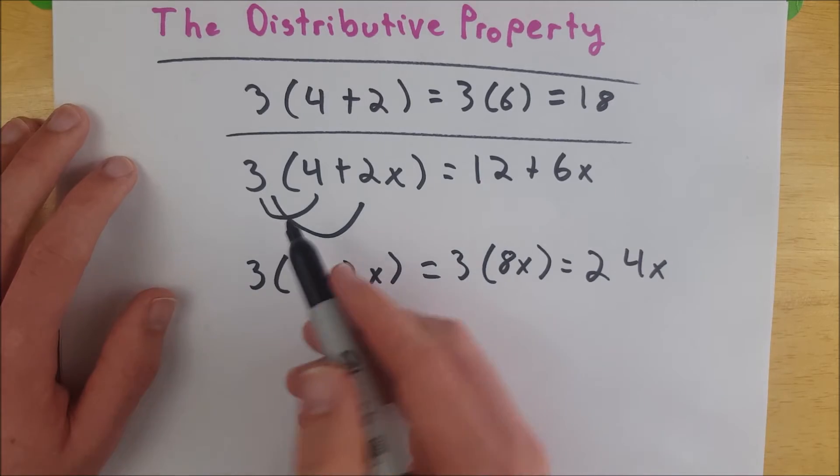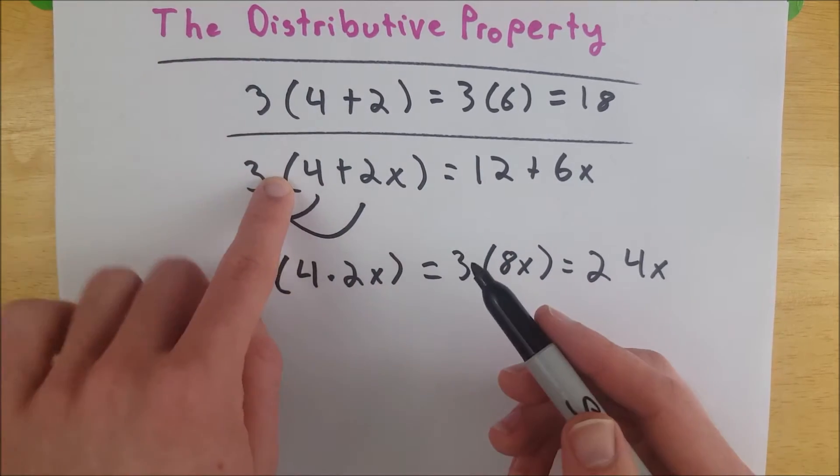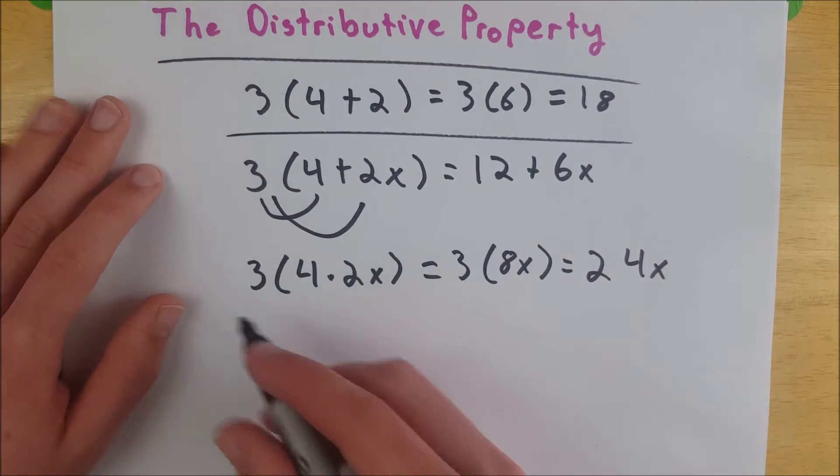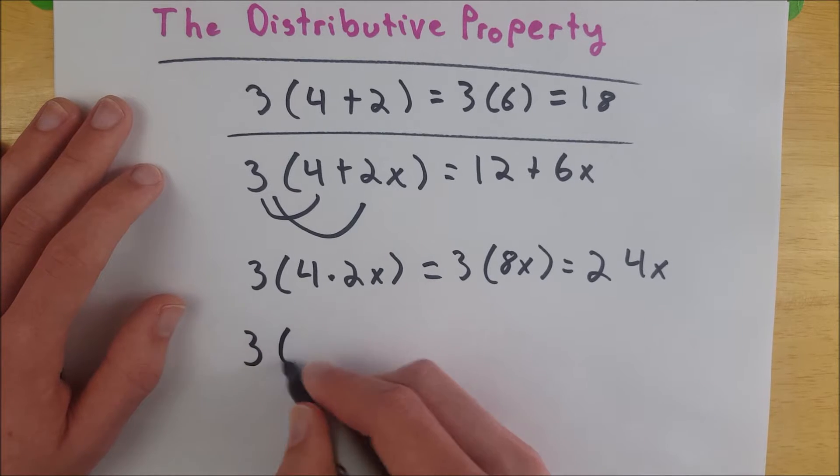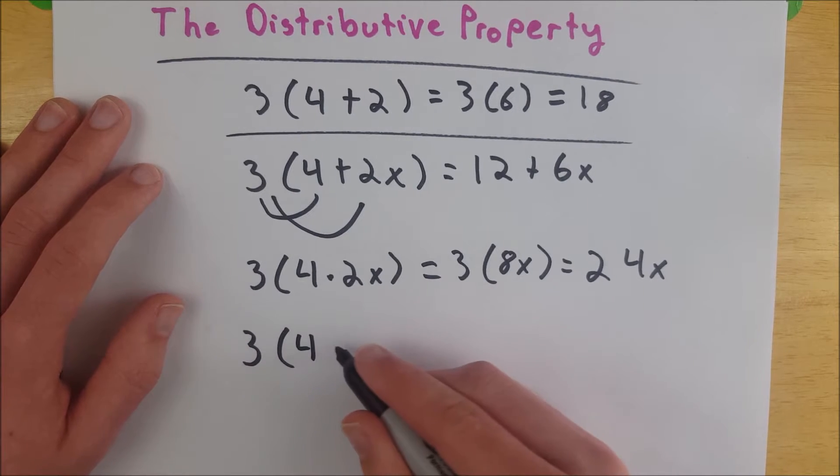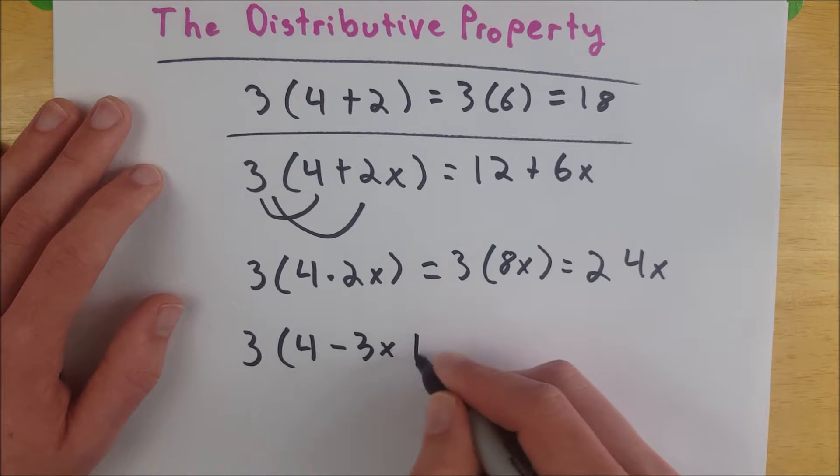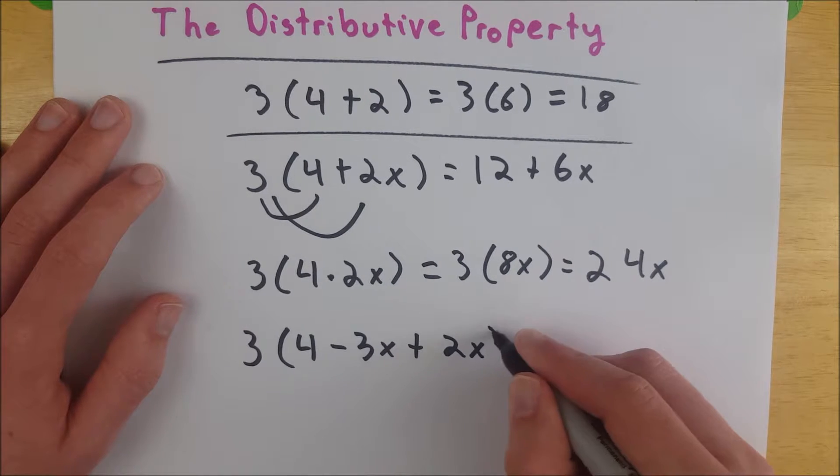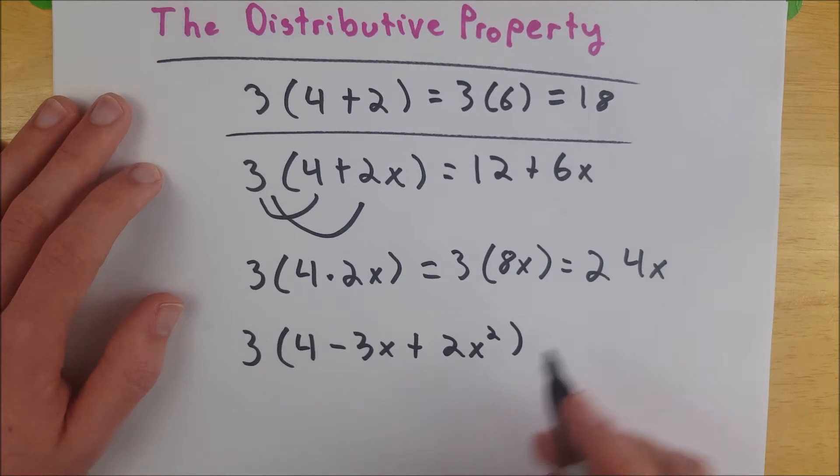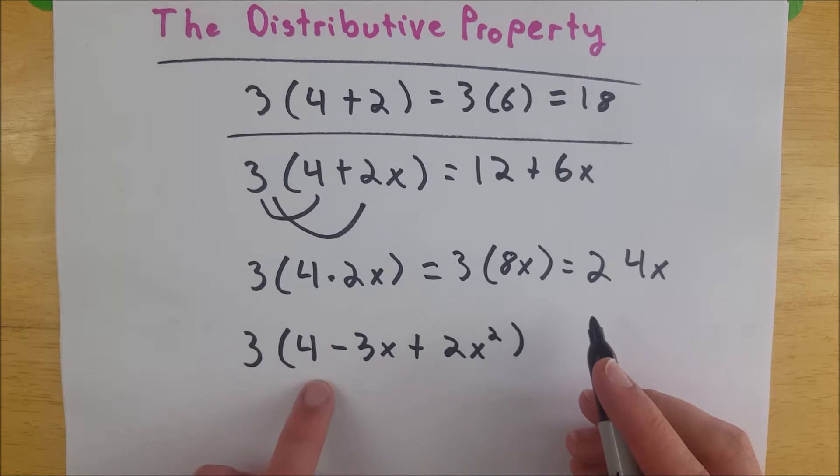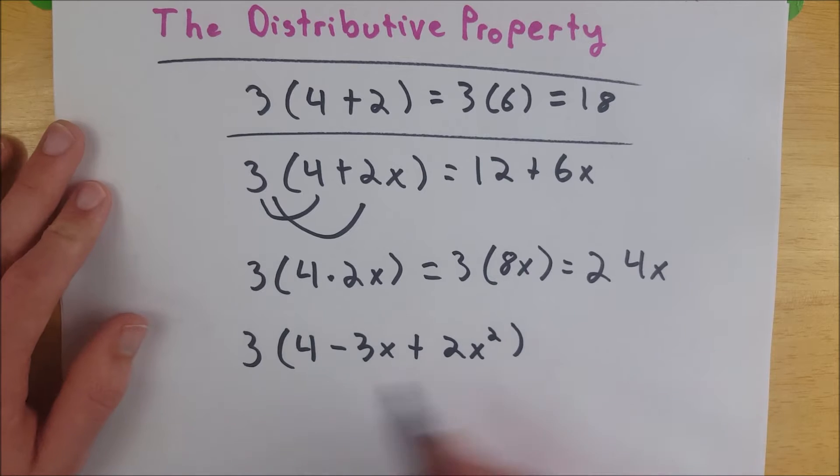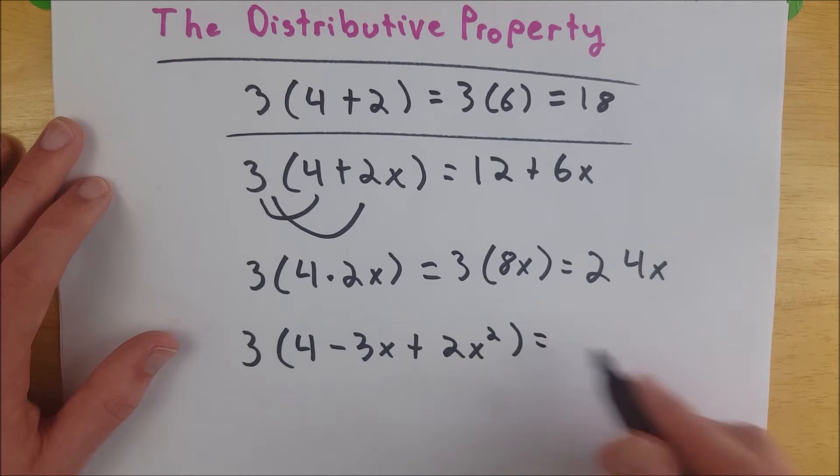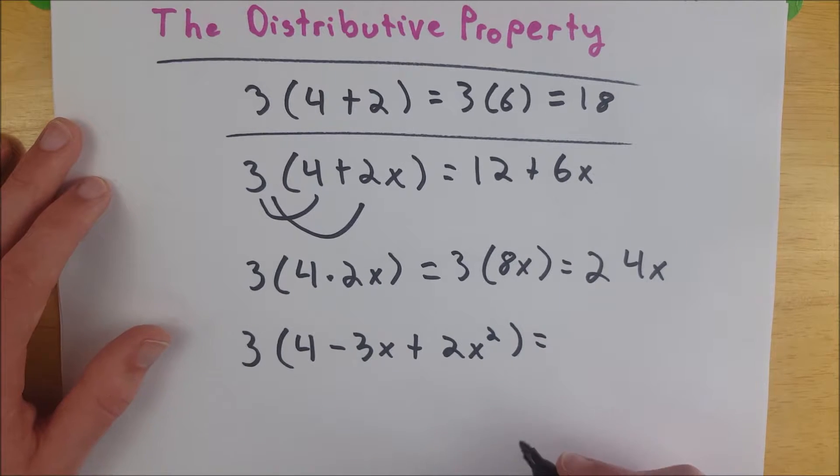So you only need it when you've got parentheses and inside the parentheses you've got addition or subtraction. For example, if we had 3 multiplied by 4 minus 3x plus 2x squared, well, we don't have any like terms in here. We can't subtract 3x from 4, we can't add 2x squared to anything.